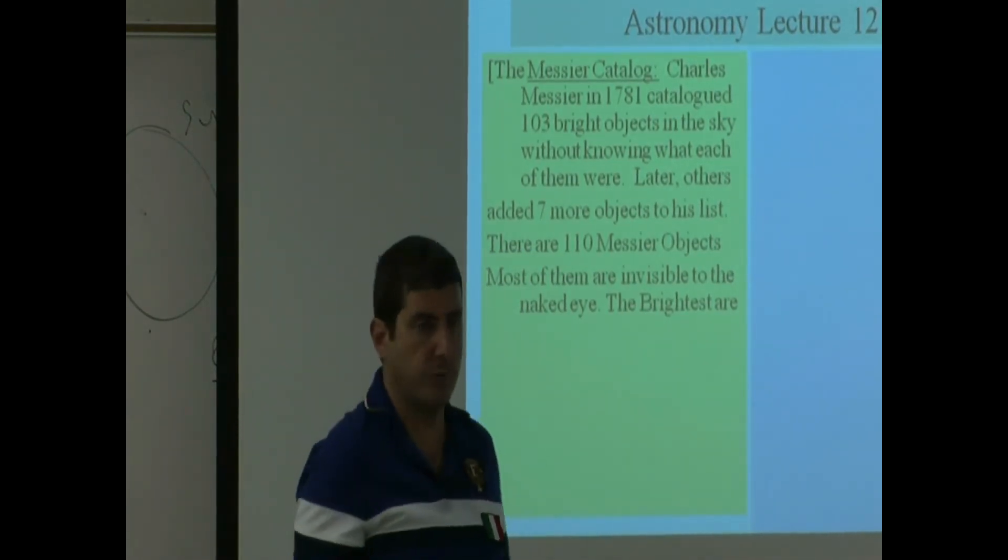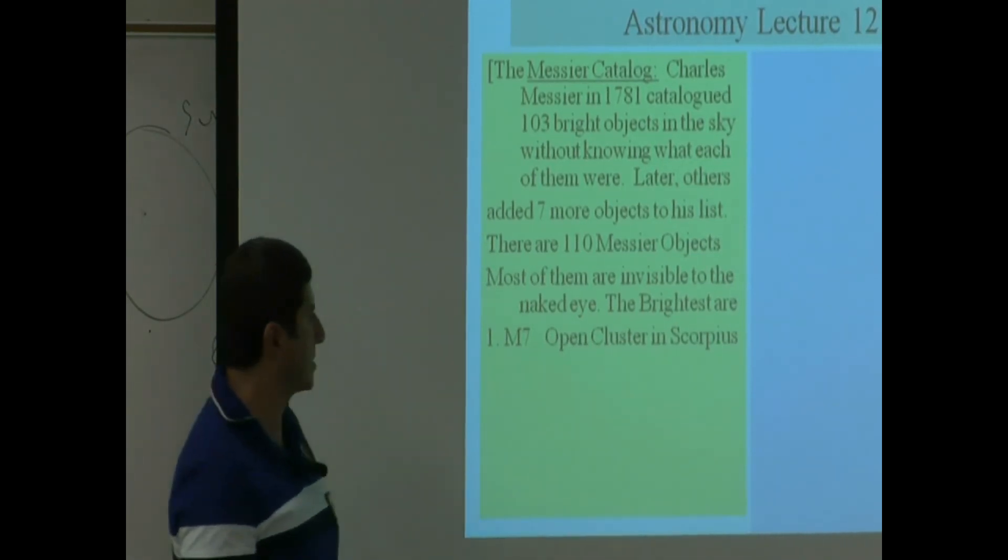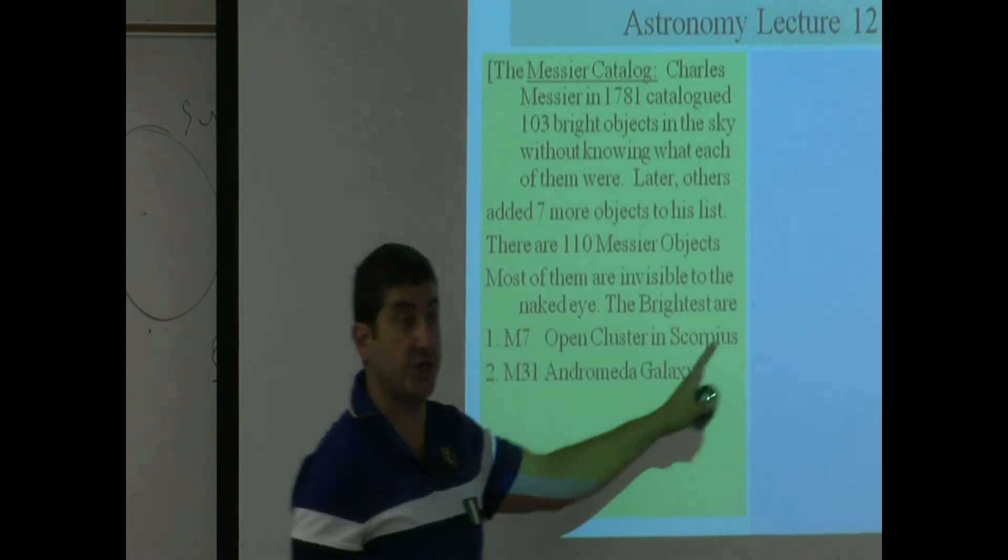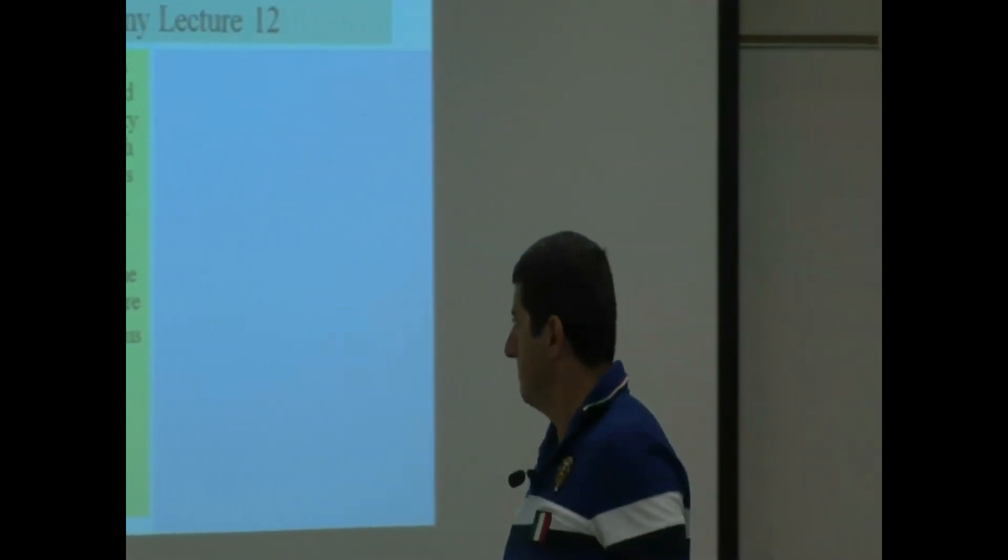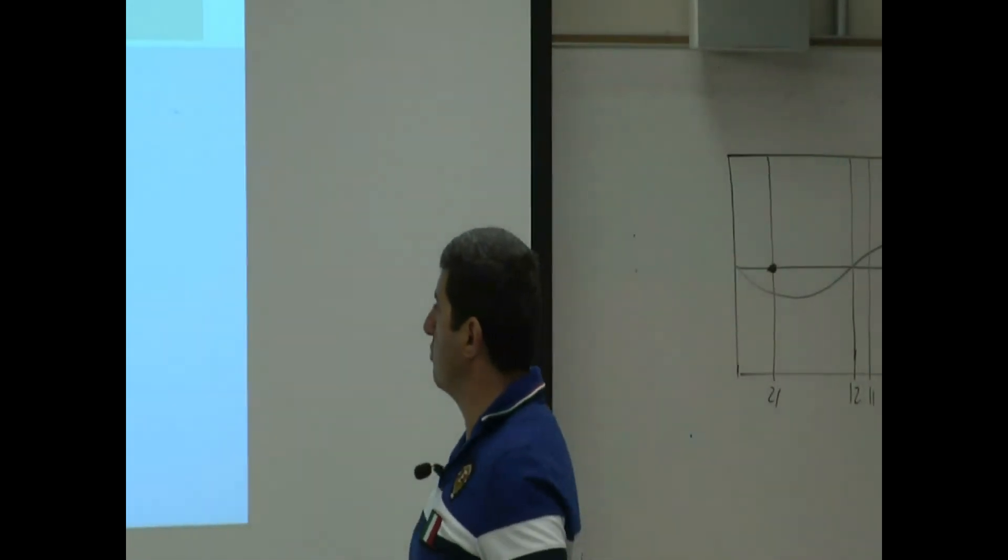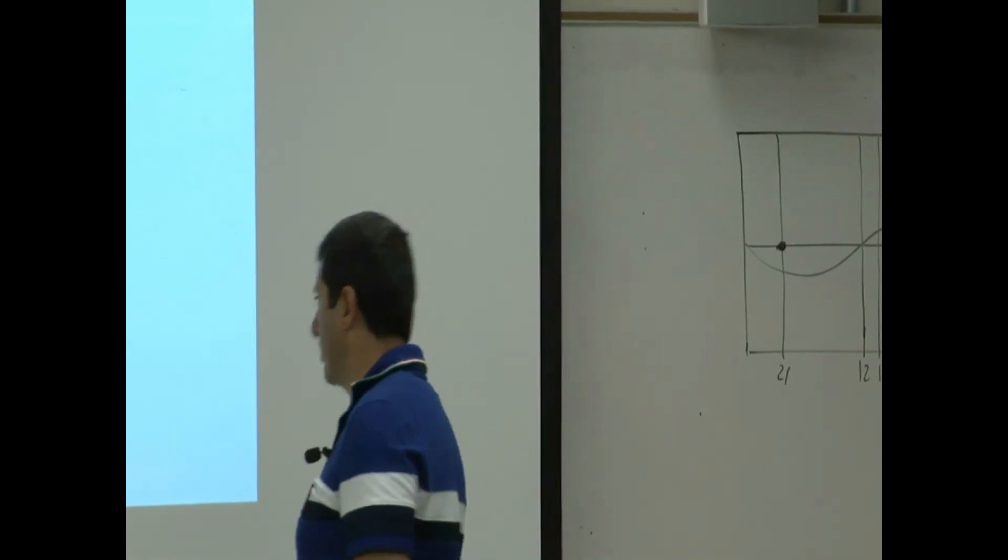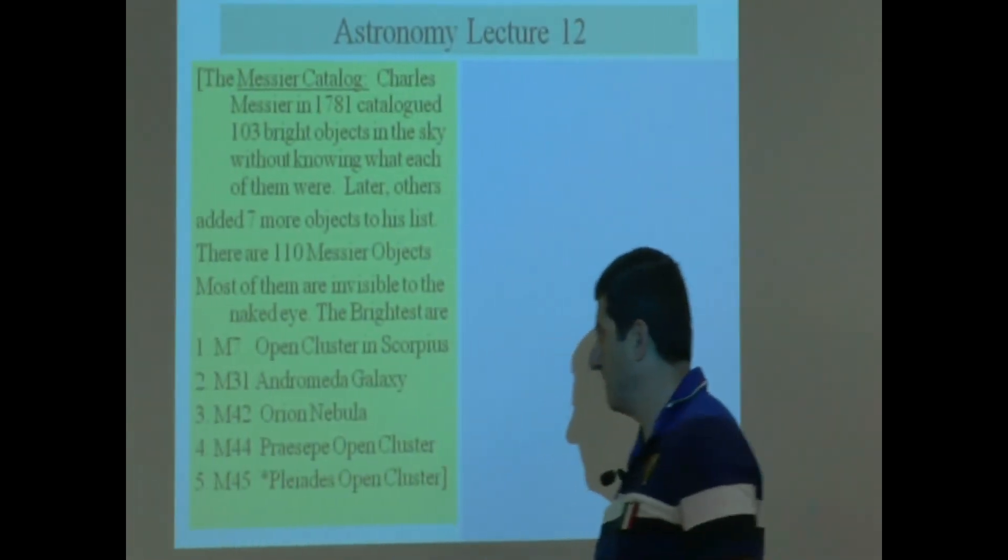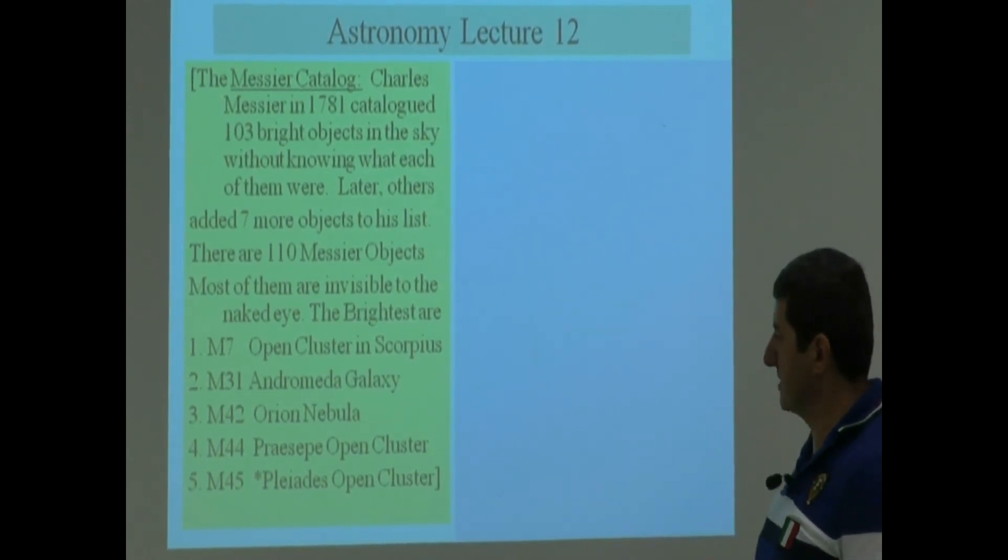Most of them are invisible to the naked eye. The brightest ones that you can see, probably without needing the telescope, are Messier object M7, open cluster in Scorpius. Messier object M31, which is the Andromeda. I told you about the Andromeda. Messier object M42, the Orion Nebula. Messier object M44, the Praesepe open cluster. Messier object M45, the Pleiades open cluster.